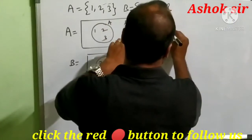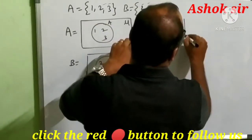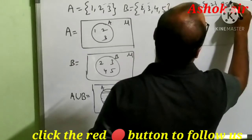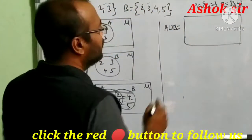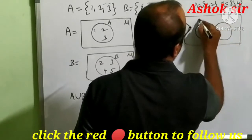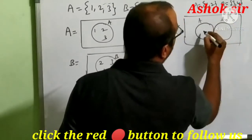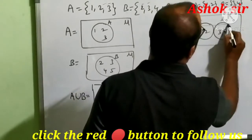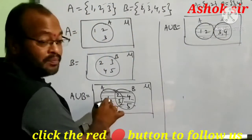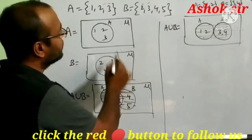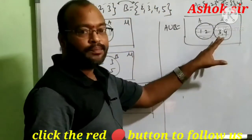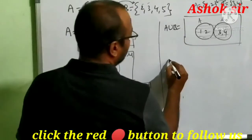Sometimes there is no common element. If A = {1, 2} and B = {3, 4}, we want A union B but there is no common element, so the circles do not overlap — these are disjoint sets. We write 1, 2 in one circle and 3, 4 in the other, then shade the total part of both circles. The difference is: when common elements exist the sets are not disjoint; when there are no common elements, the sets are disjoint. This is about A union B.